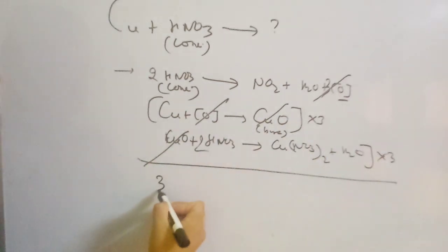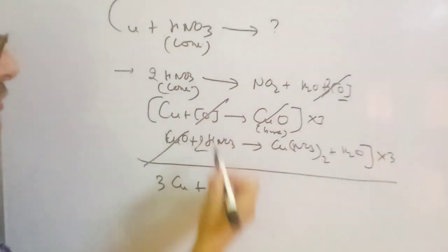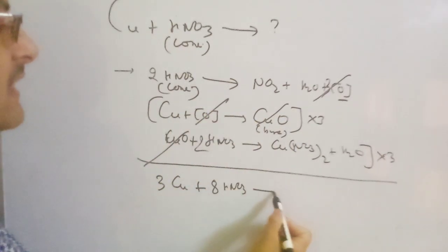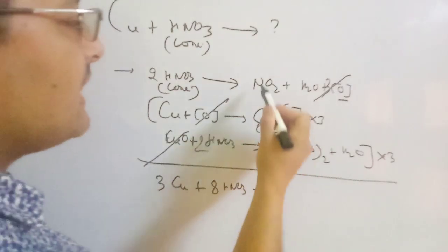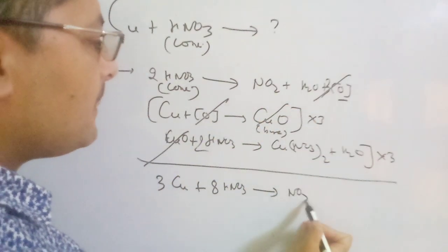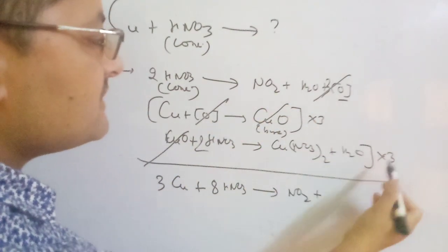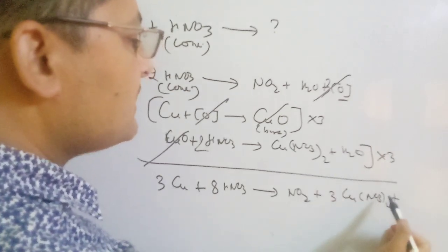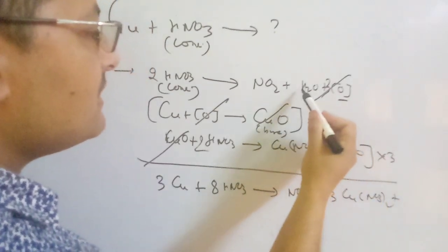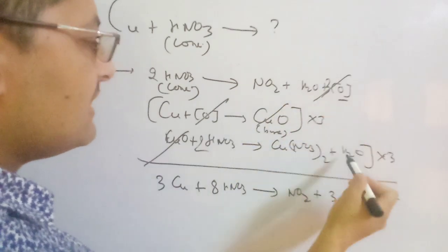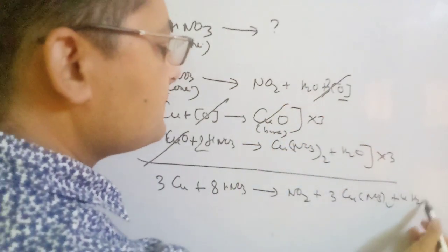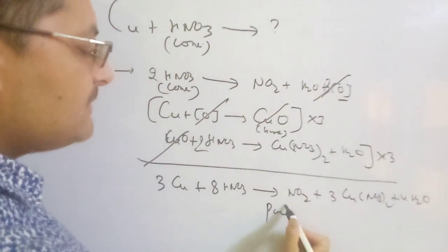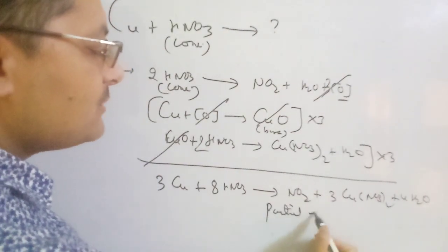So: 3 copper plus 2 nitric acid plus 6 nitric acid — total 8 nitric acid — gives 6 NO₂ plus 3 copper nitrate plus water. There is 1 water here and 3 water there, so 4 water total. This reaction is balanced by the partial equations method. Surely this is the balanced chemical equation.